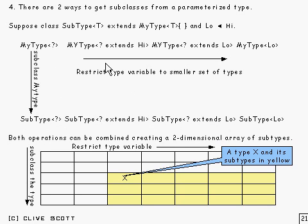Now, you can combine both operations, creating a sort of two-dimensional array of subtypes. And if we've got something here, some type X, then all the subtypes of X will lie in this yellow area down here.